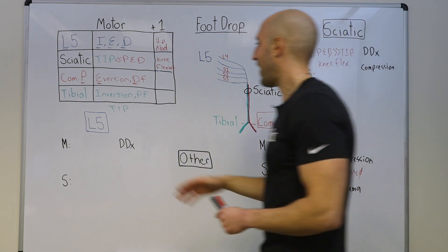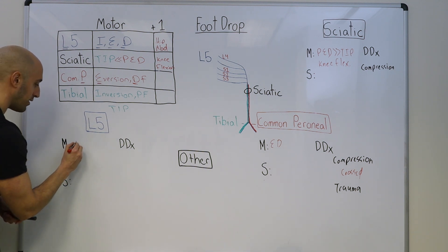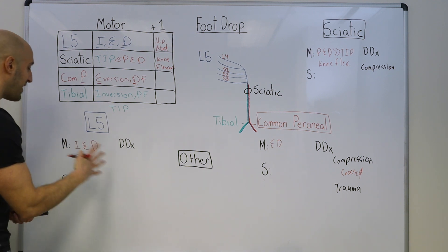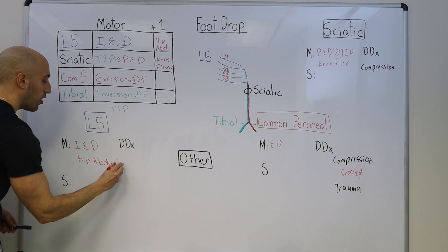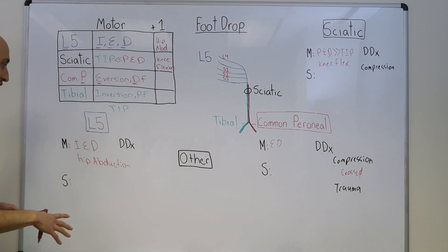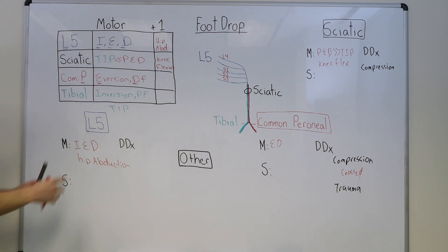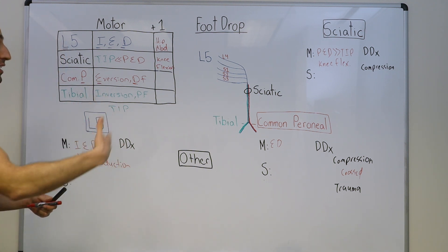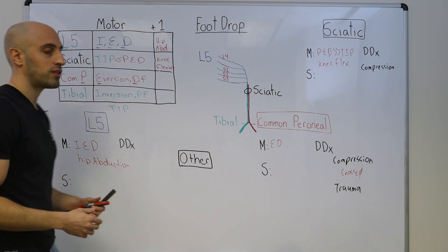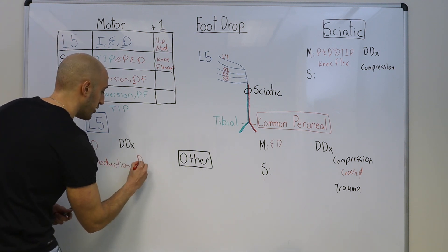Let's talk about L5 radiculopathy. What are the motor symptoms? LIED. So impaired inversion, eversion, and dorsiflexion with impaired hip abduction, maybe impaired hip abduction, though normal plantar flexion. The sensory deficits, in addition to the lateral calf and the dorsum of the foot, like all radiculopathies causes pain. So you also have pain in addition to the paresthesias and the numbness. The differential diagnosis is lumbar degenerative disc disease.